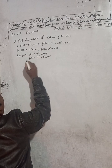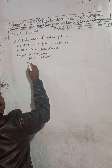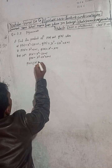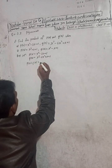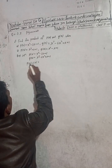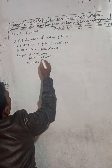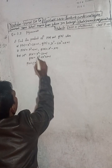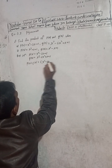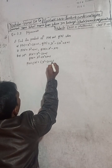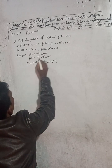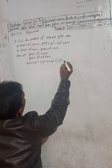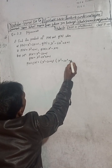P of X is equal to x squared minus 2x plus 1. And Q of X is equal to x cubed minus 6x squared plus x plus 1. We have to find the product of P of X and Q of X. The product means P of X into Q of X.